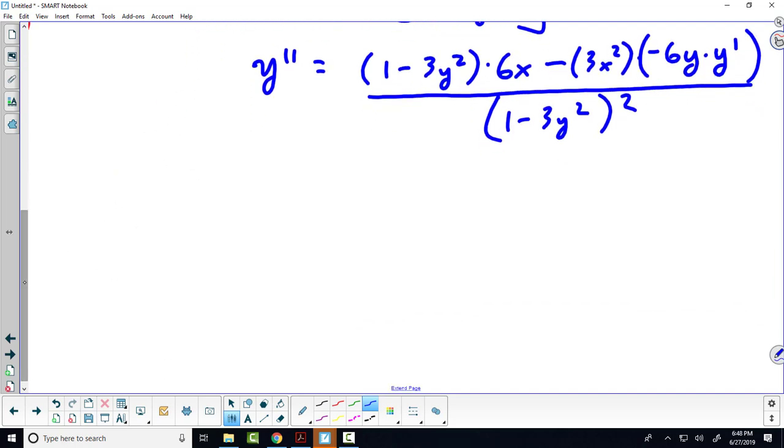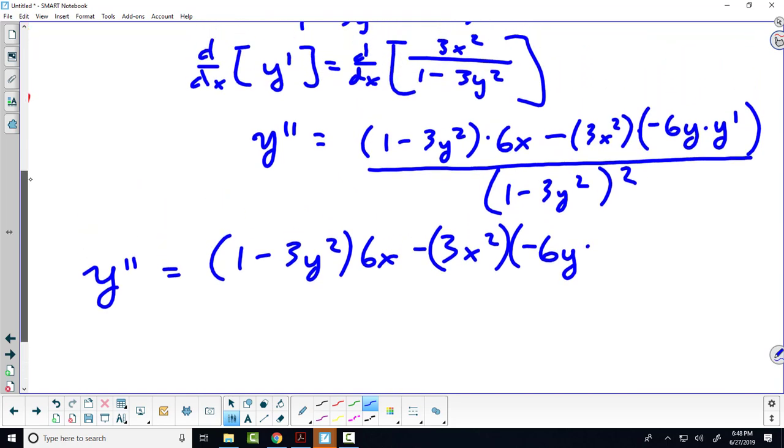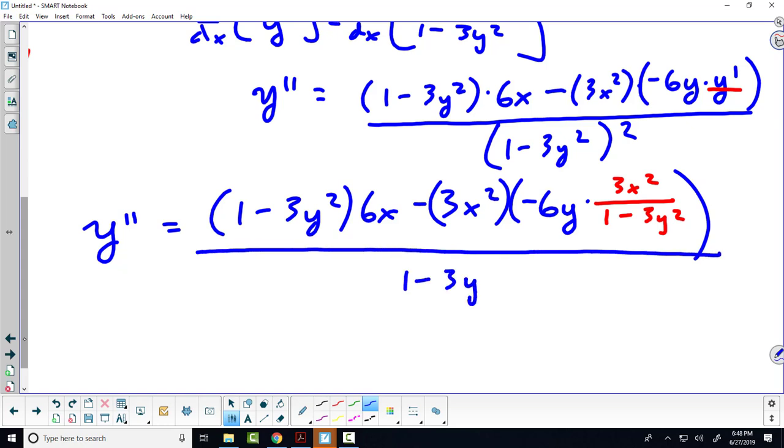Because I have y prime squared, y double prime is going to be 1 minus 3y squared times 6x minus 3x squared times minus 6y, and then in place of y prime I'm going to substitute 3x squared over 1 minus 3y squared, where all of that is going in place of that y prime term. Don't forget it was still a quotient rule, all over 1 minus 3y squared squared.